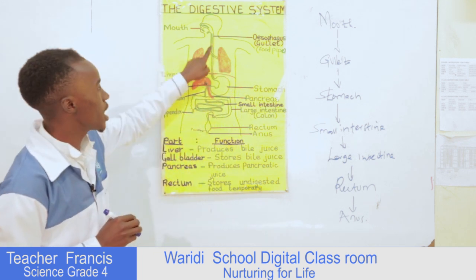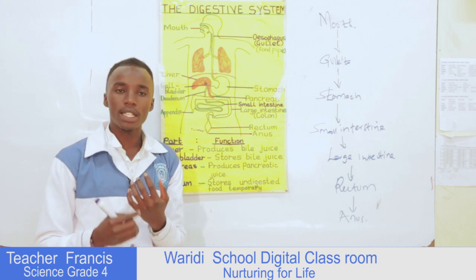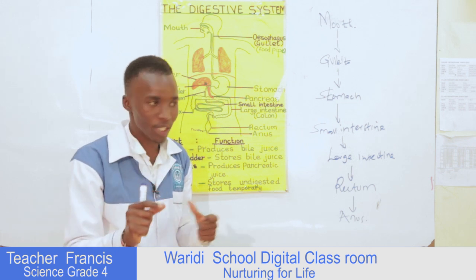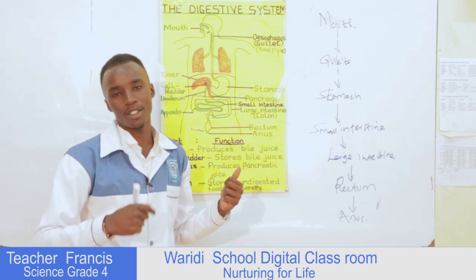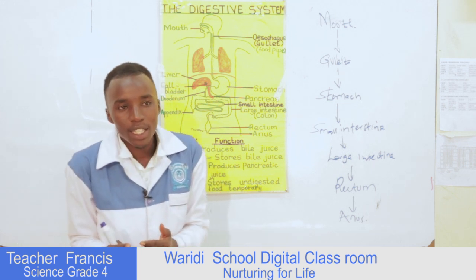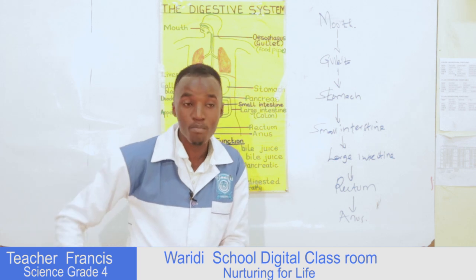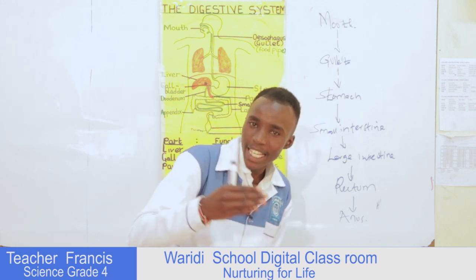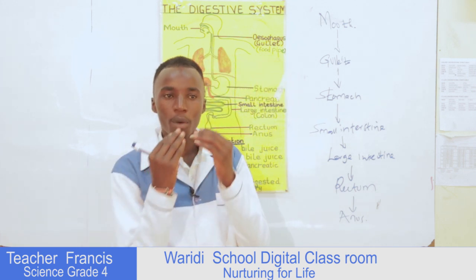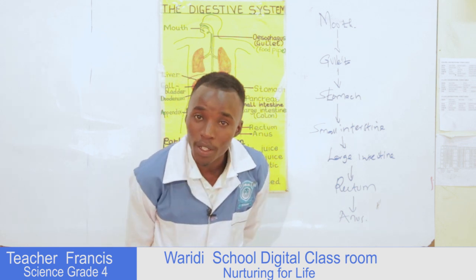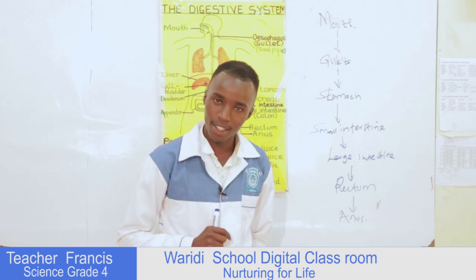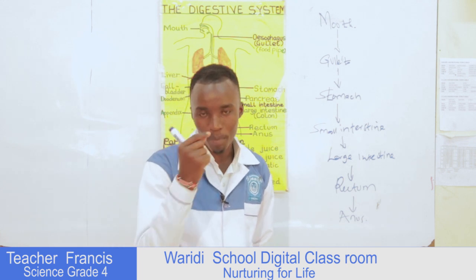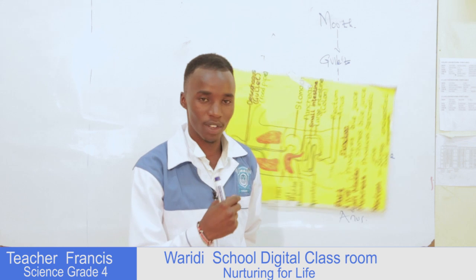The gallet — another name for it is the oesophagus. As that food moves from the mouth to the stomach, the passage is called the oesophagus. And that food does not just pass simply — it has to move in a wave-like manner. The process by which food moves in a wave-like manner from the mouth to the stomach is called peristalsis. Peristalsis is the process by which food moves from the mouth to the stomach in a wave-like manner.